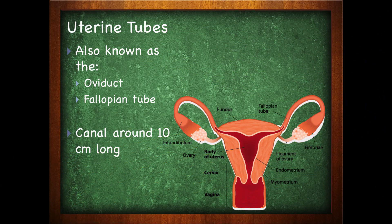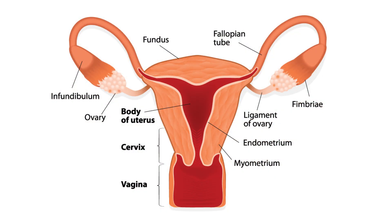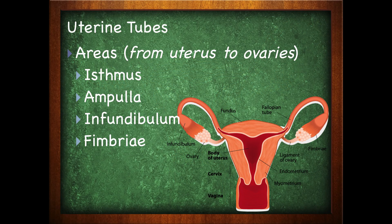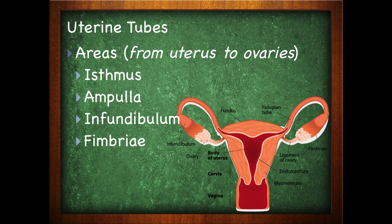Also within this area, we have something called the uterine tubes, also known as the oviducts or fallopian tubes. It is a canal that's around 10 centimeters long — this is the pathway that connects the ovaries to the uterus. The areas of the uterine tube from the uterus to the ovaries are the isthmus, the ampulla, the infundibulum, and the fimbrae.